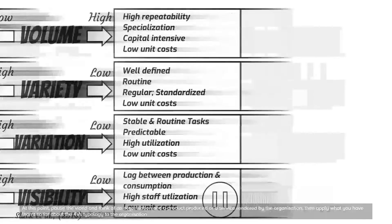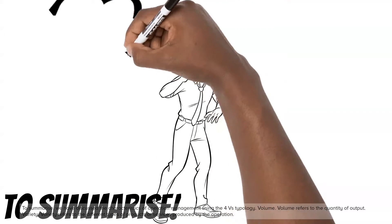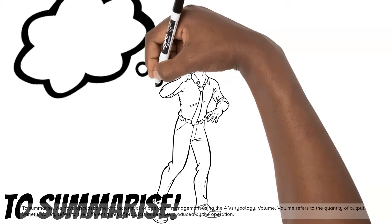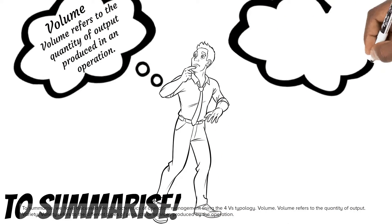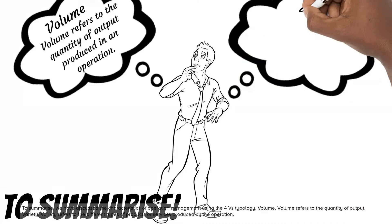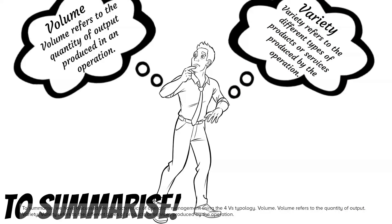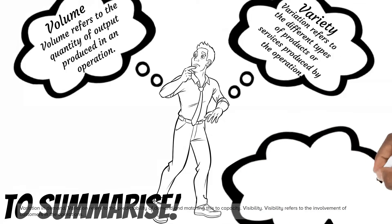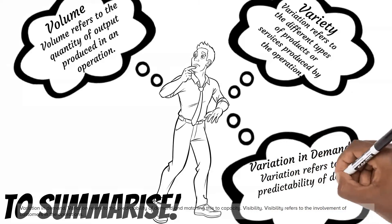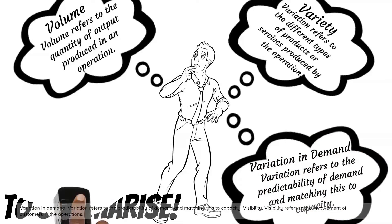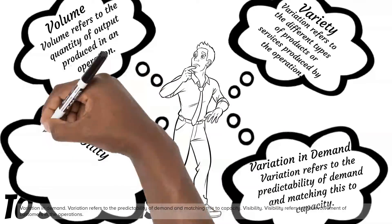To summarize, we have discussed the characteristics of operations management using the 4Vs typology. Volume refers to the quantity of output. Variety refers to the different types of products or services produced by the operation. Variation in demand refers to the predictability of demand and matching this to capacity. Visibility refers to the involvement of customers in the operations. These are the 4Vs typology of operations management.